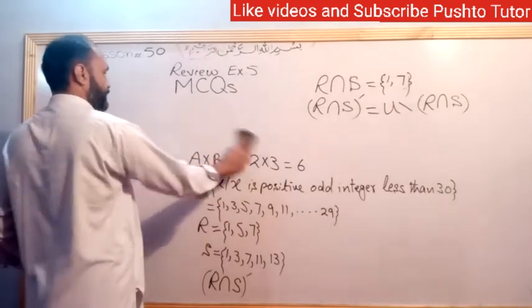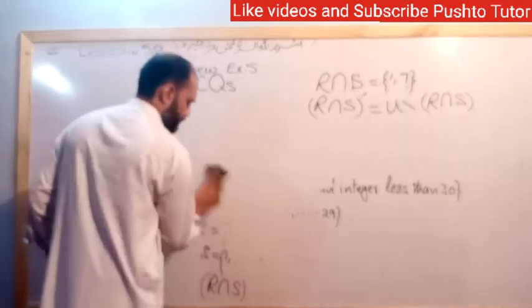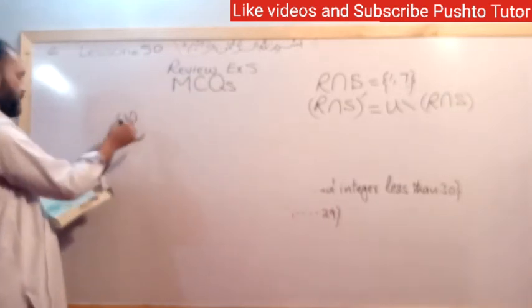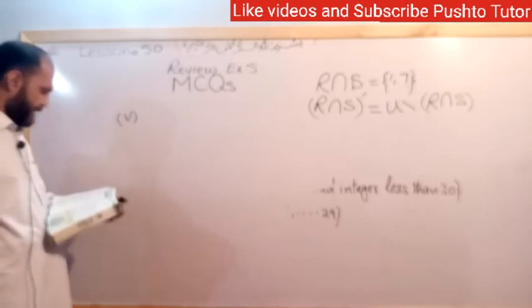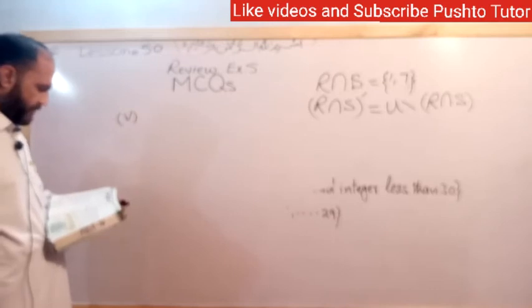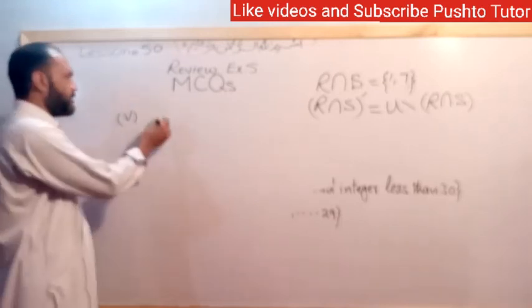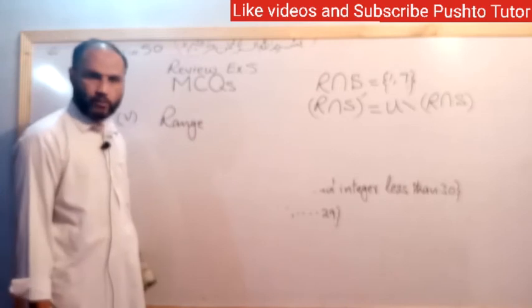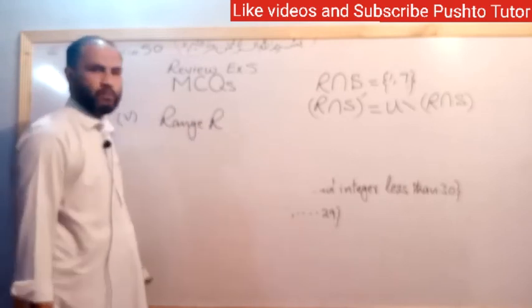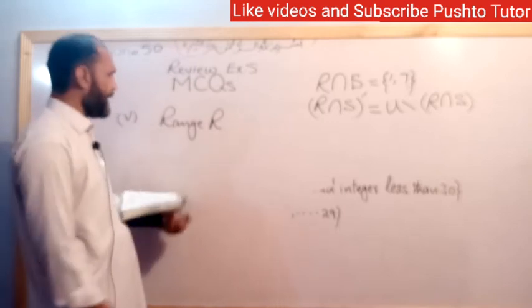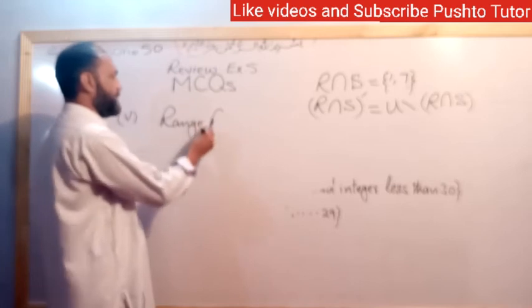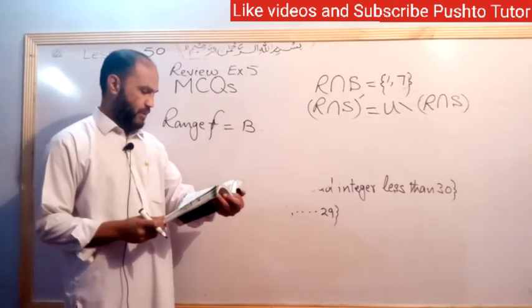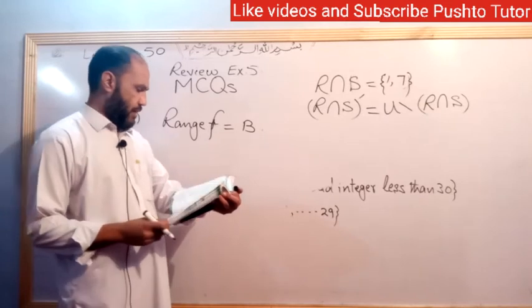Question 6: If f is a function from A to B, then f is an onto function when the range equals the B set. That's the condition - all second elements in the ordered pairs form the complete set B. Range of f equals B. That's the first option, the answer.